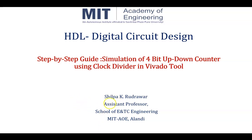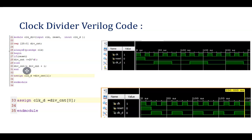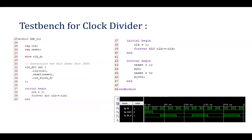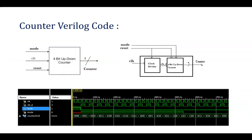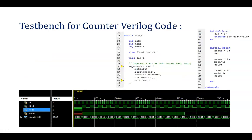Before moving ahead, we have already seen the clock divider concept — how to write code for a clock divider and its test bench. Using this clock divider, we will be driving our 4-bit up-down counter. This is the code for the up-down counter along with the test bench, and we will be simulating this in the Vivado tool.